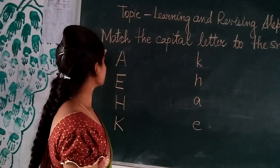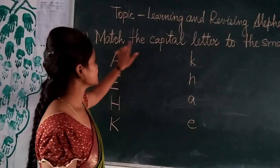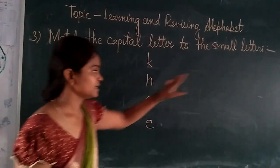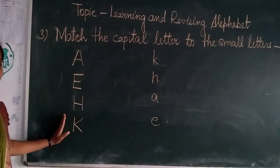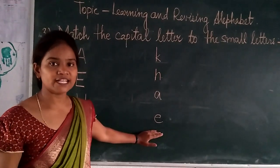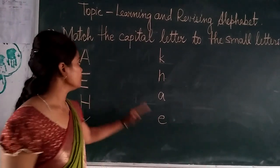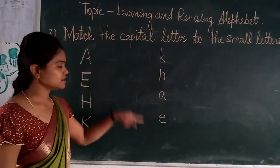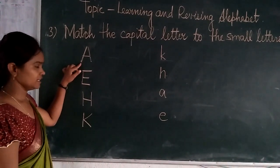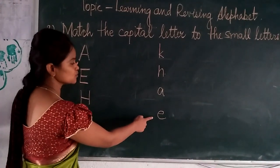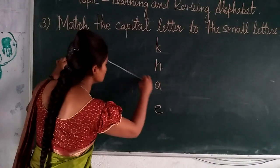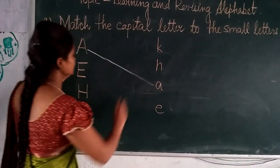Next, third exercise: match the capital letter with small letters. This side is given a capital letter and that side is given a small letter. Now we will match the capital to the small letter. First is capital A — now we will find out small A and match capital to small letter.